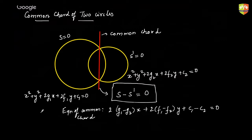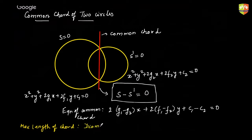When can the common chord be of maximum length? What can be the maximum length of the common chord? The maximum length of the common chord can only be equal to the diameter of the smaller circle.